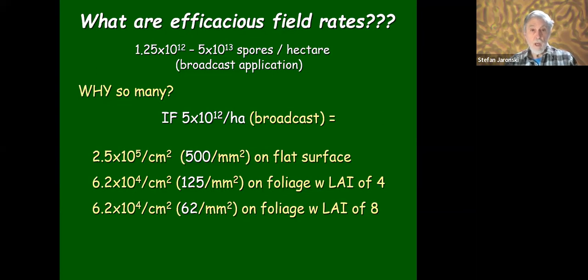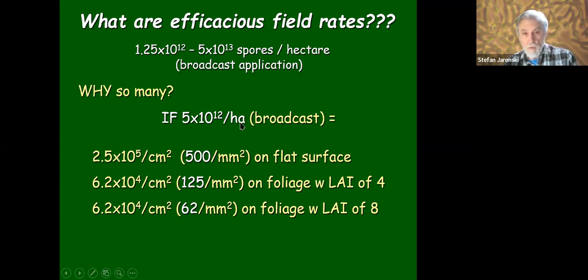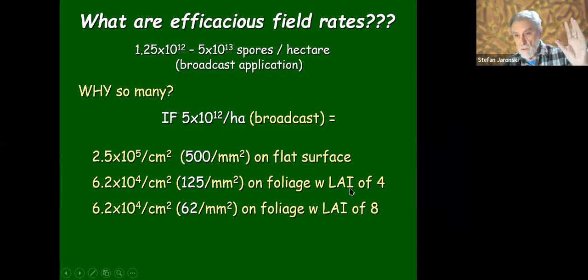Why so many spores? Typical label rates are 1.25×10¹² to 5×10¹³ spores per hectare in a broadcast application. Using 5×10¹² per hectare broadcast over a field, that gives you 500 spores per millimeter squared on a flat surface. But a field is not flat — it has foliage with a leaf area index. Most foliage has a leaf area index of four, so you're getting 125 spores per millimeter squared. A citrus tree five to ten years old has a leaf area index of eight, which means a hectare of citrus is really eight hectares of surface area you have to treat.